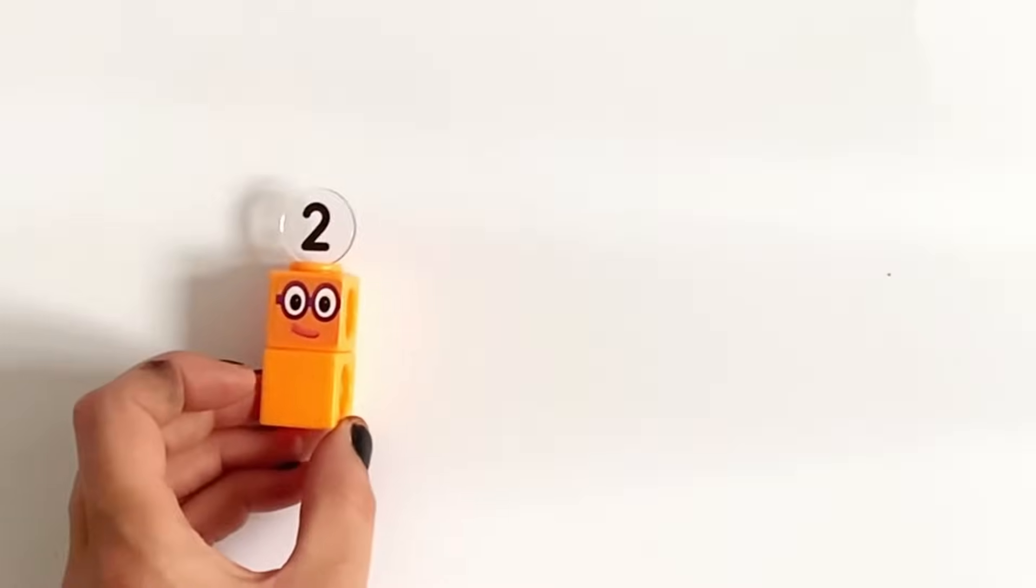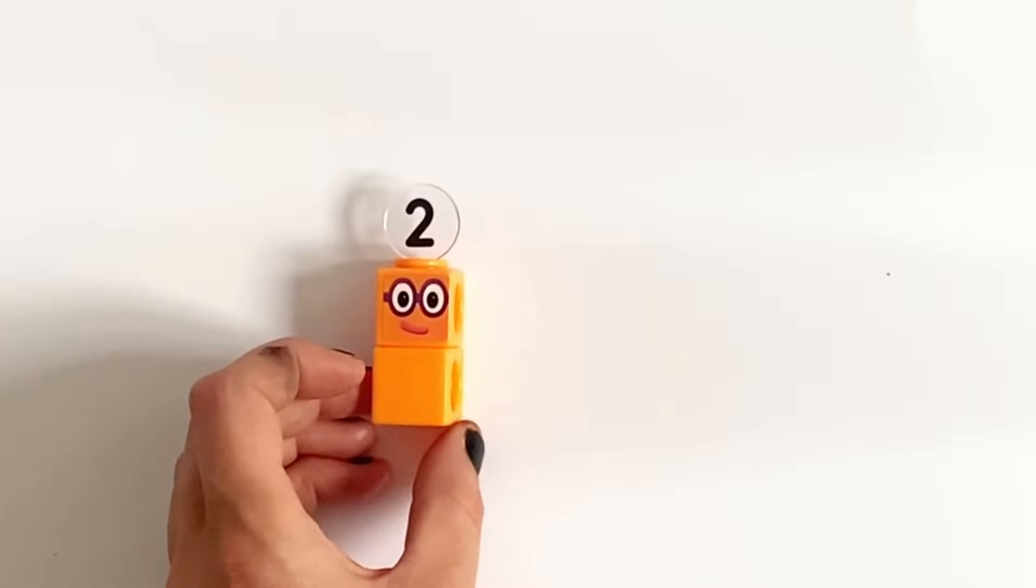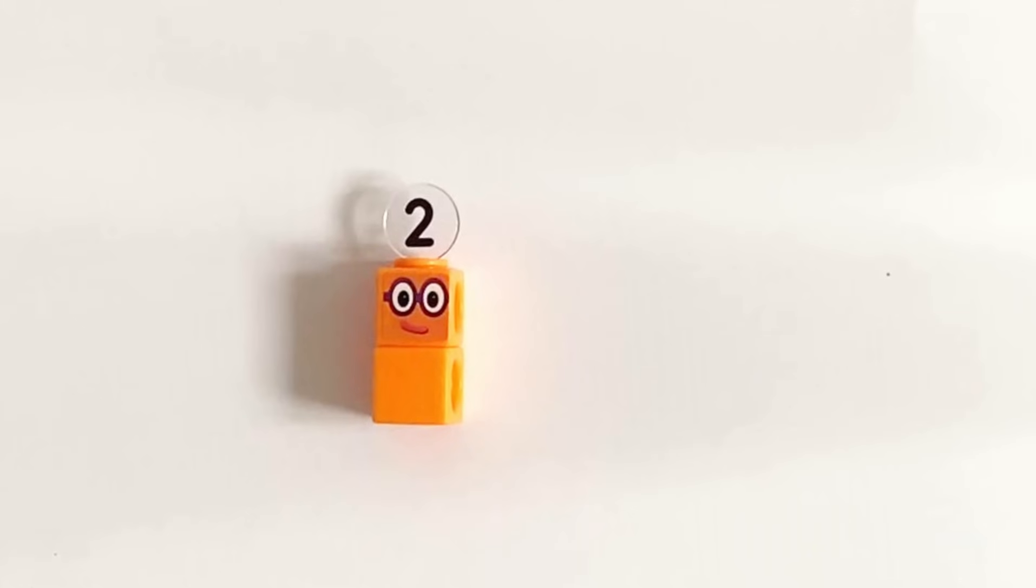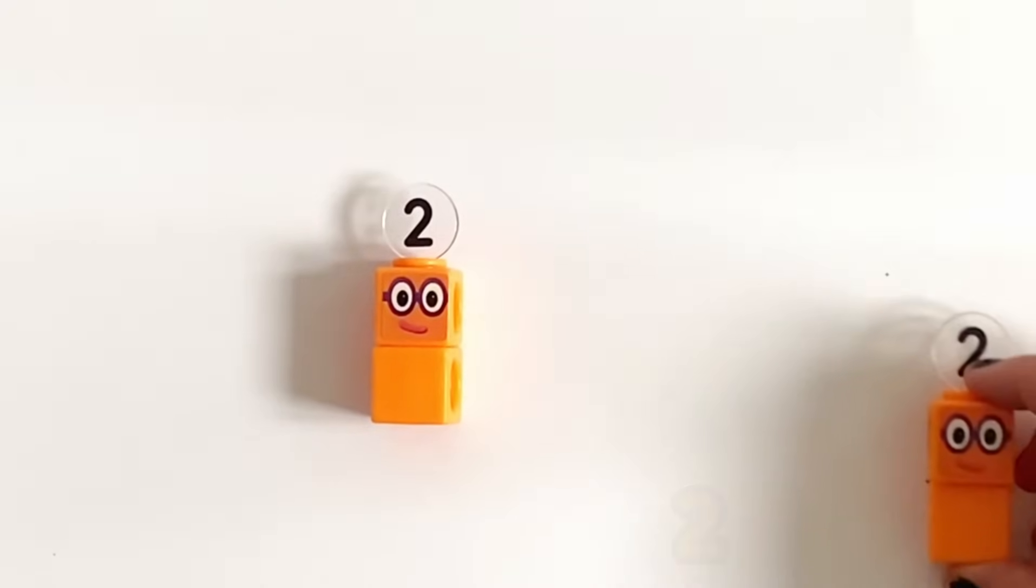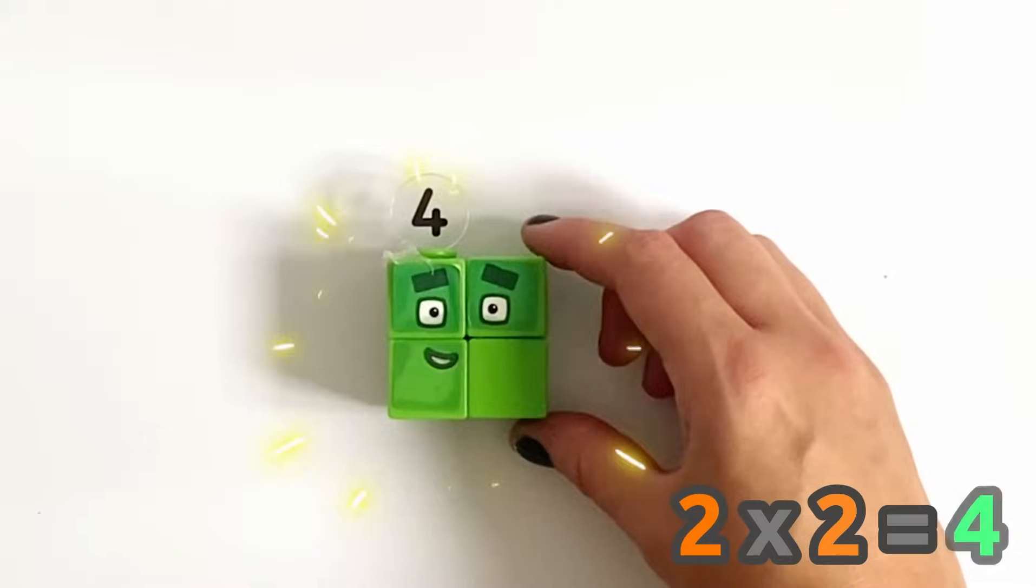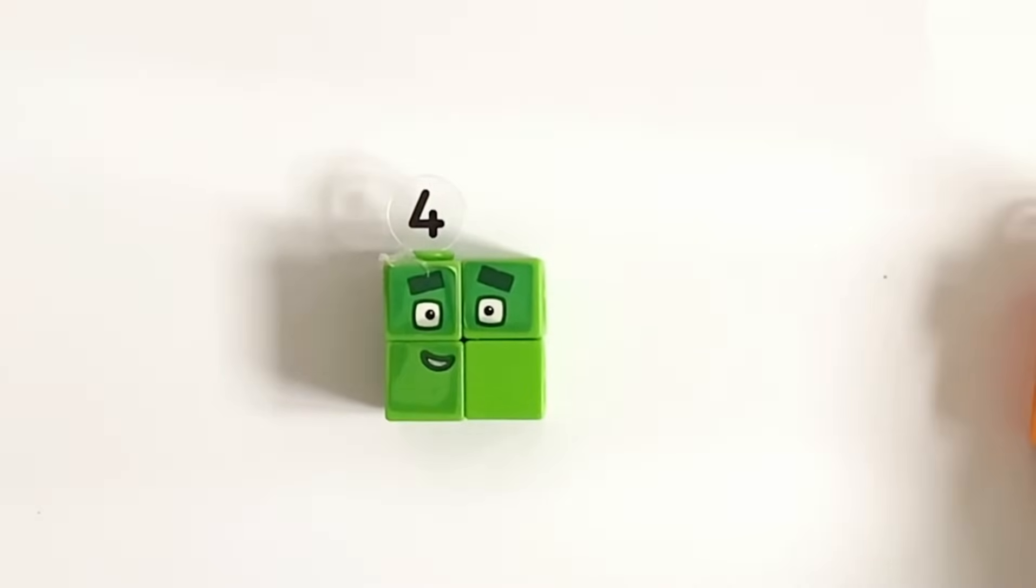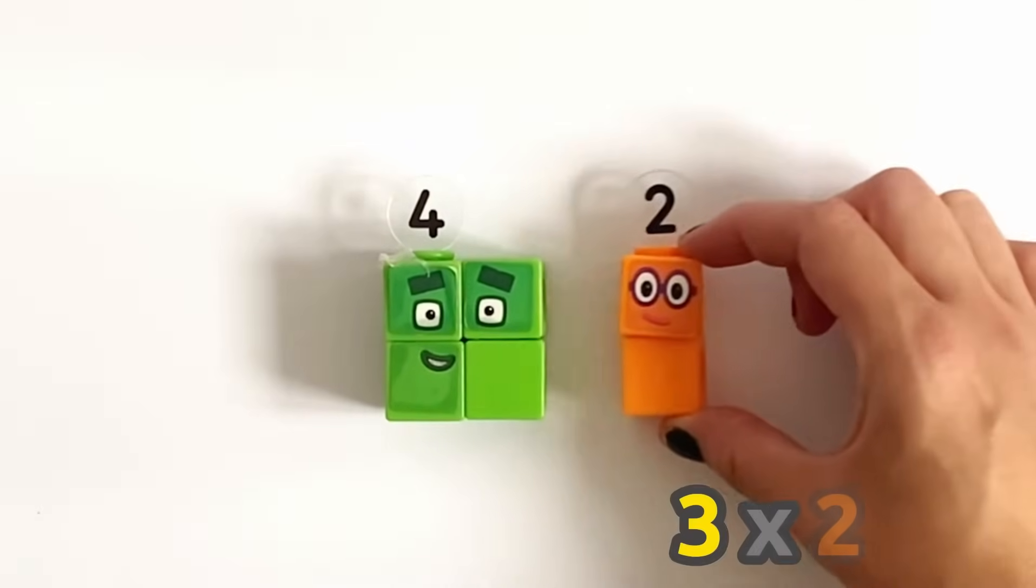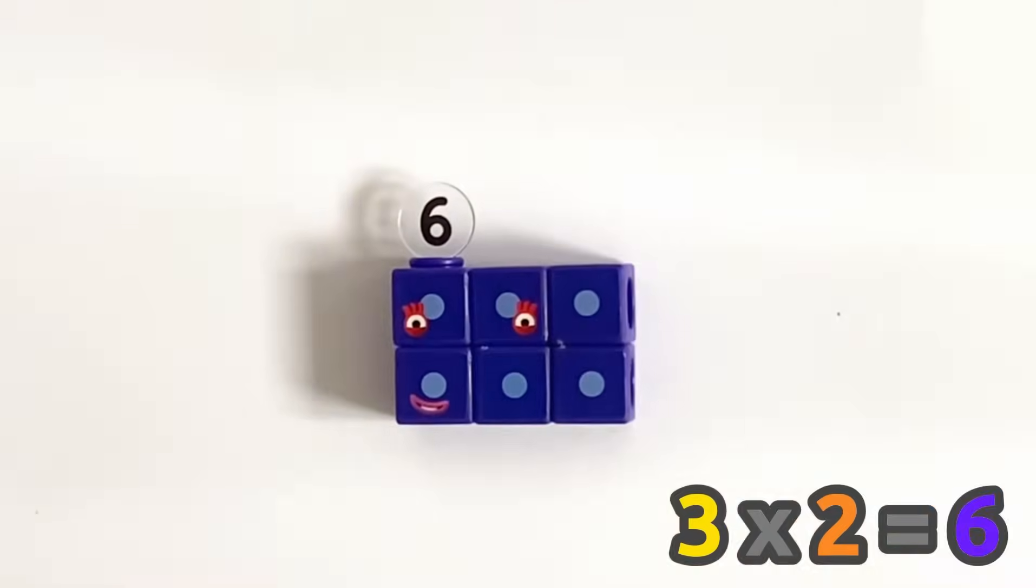Next we have the 2 times table. So here is NumberBlock 2 and 1 times 2 equals 2. Then 2 times 2 or 2 lots of 2 equals 4. 3 times 2 equals 6.